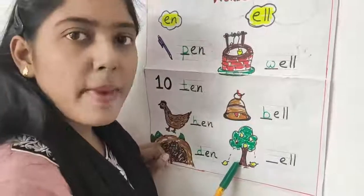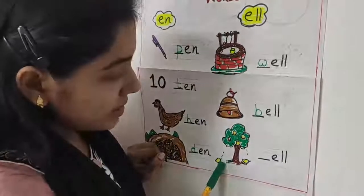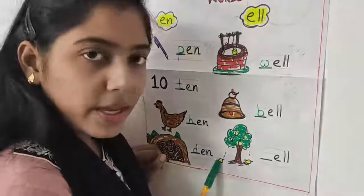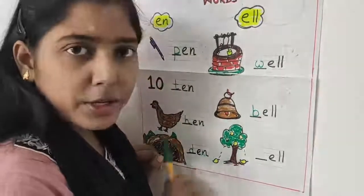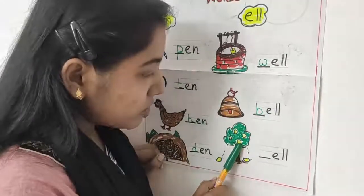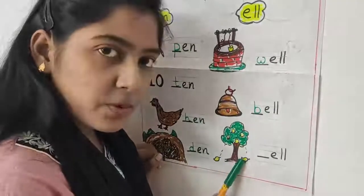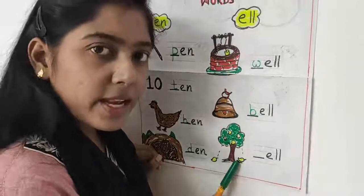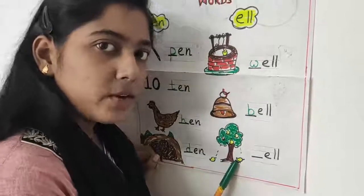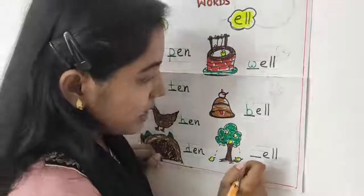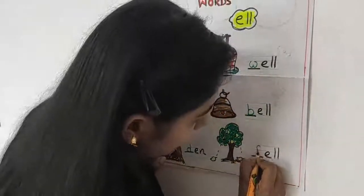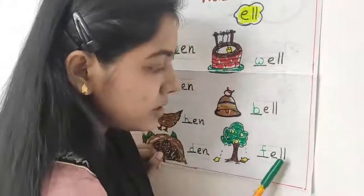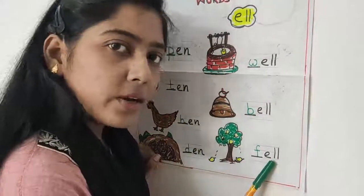This is a mango tree, and the mangoes are here — down. Because after a big storm, all the mangoes have fallen to the ground. That is called fell. F for fell. Everyone say F-E-double-L — fell.